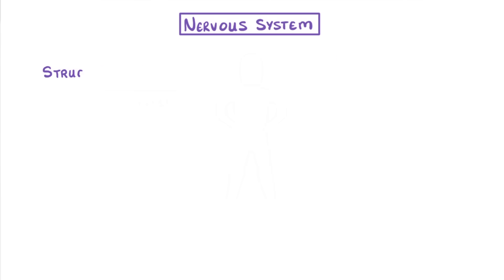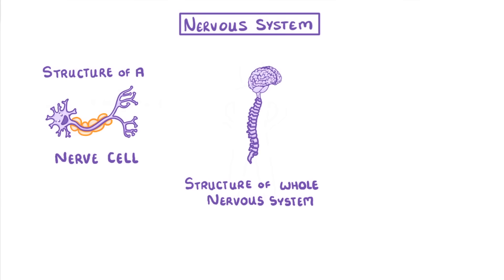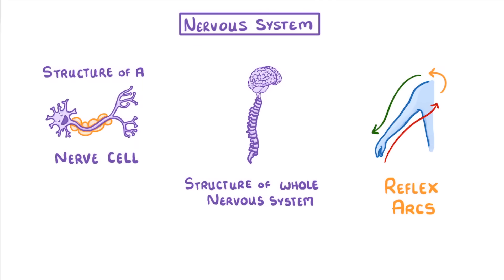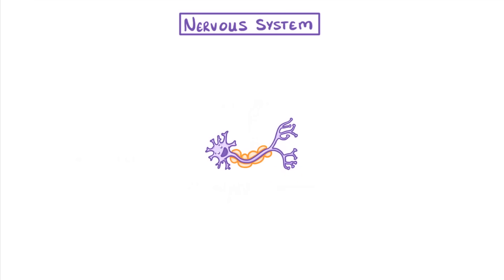The main things you need to know for this topic are the structure of a nerve cell, the structure of the whole nervous system, and how a reflex arc works. Let's start with an individual neuron, which we can also call a nerve cell.